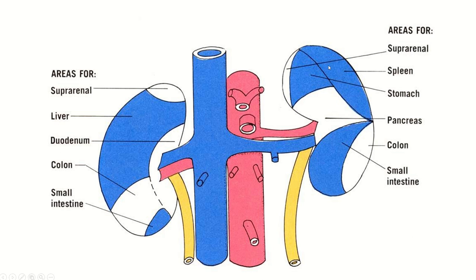Left kidney: this area is related with the suprarenal gland, area for the stomach, spleen, pancreas, small intestine and descending colon. The stomach, spleen and small intestine — this area is covered by peritoneum.